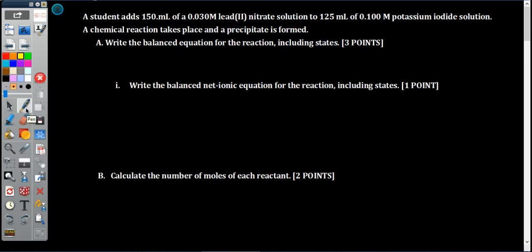Hey, what's up, chem peeps? It is free response time. A student adds 150 milliliters of a 0.030 molar lead(II) nitrate solution to 125 milliliters of 0.100 molar potassium iodide solution. A chemical reaction takes place and a precipitate is formed.